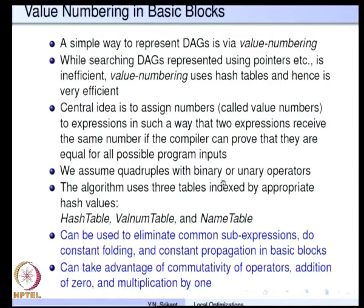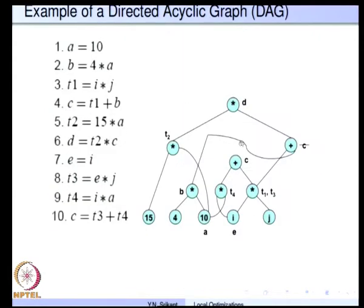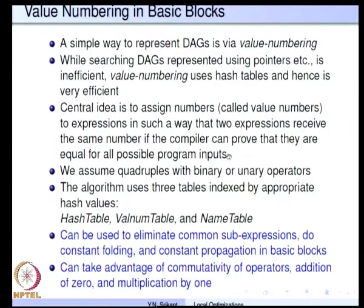As I explained in the last lecture, it is useless to try and build the directed acyclic graph using linked data structures, because every time we want to locate some node we will have to start from the top of the DAG and search the entire graph. So this is a waste of time; the technique that is normally used is called value numbering.